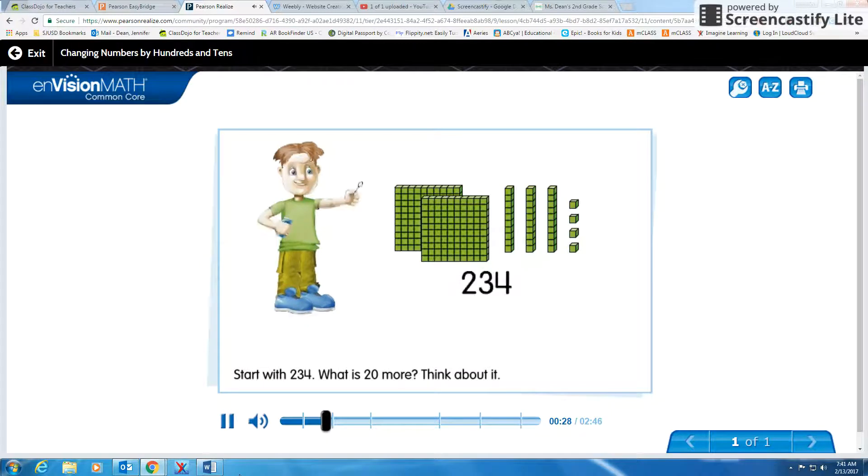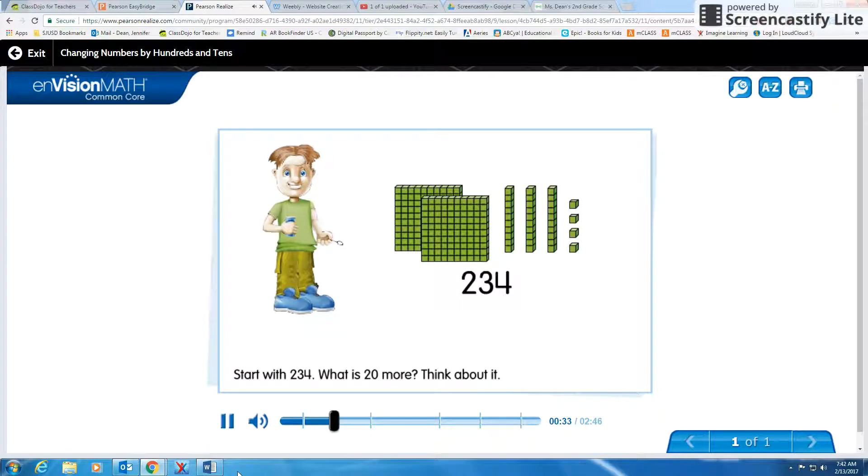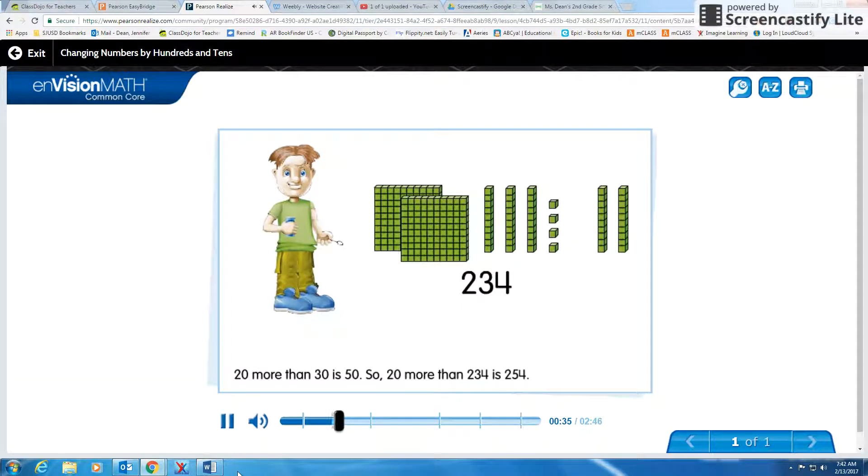Start with 234. What is 20 more? Think about it. 20 more than 30 is 50, so 20 more than 234 is 254.